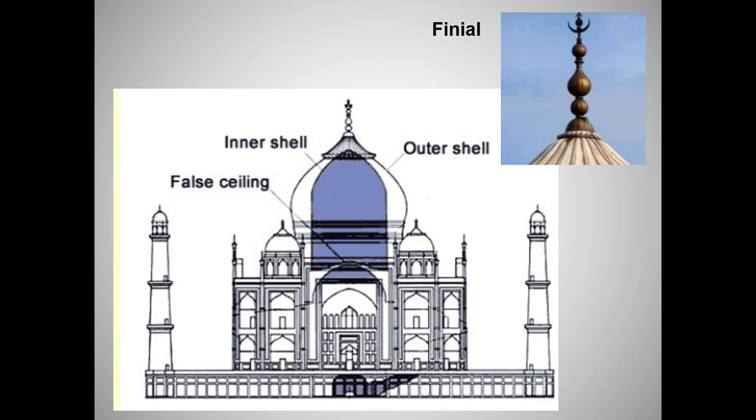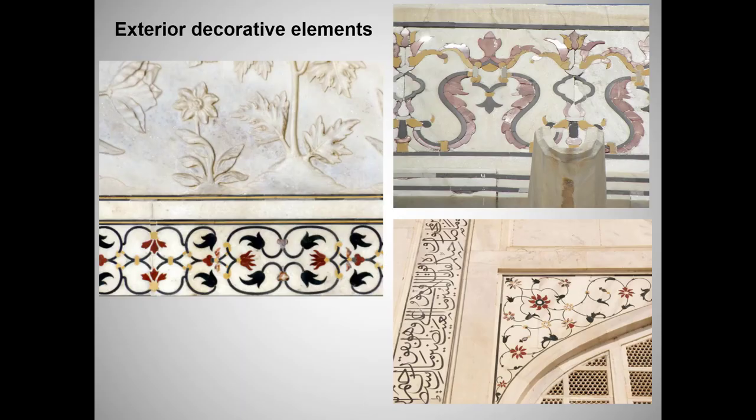The dome is actually double-shell to help the building support its weight. The interior dome is smaller to keep it in proportion in the inner chamber. The finial is an open lotus flower, a symbol widely used in Hinduism and Buddhism. The lotus flower blooms in stagnant waters, so it's a symbol of the triumph of beauty and life over ugliness and death — appropriate for a mausoleum.